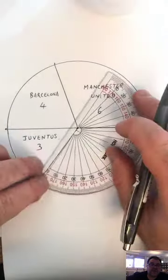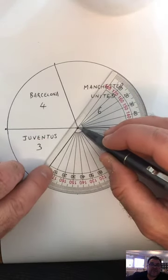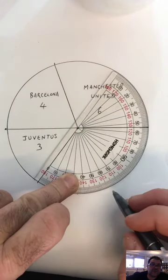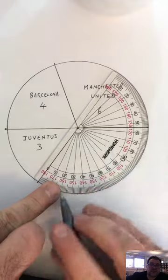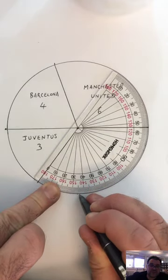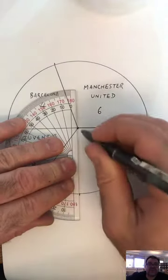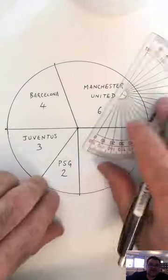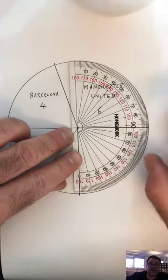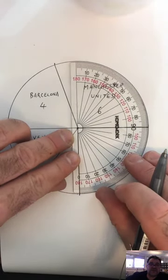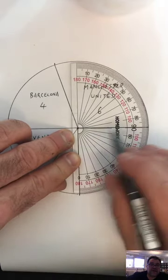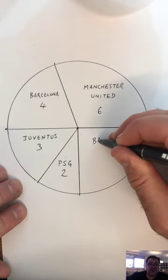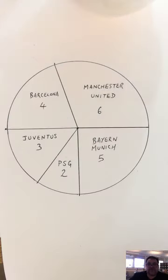Then I'm going to line up the angle measurer, centre at the centre, and 0 on the line I just drew, and measure the next angle — that's the angle for PSG. And finally, the last one should be 90 degrees for Bayern Munich. Centre at the centre, 0 on the line I just drew, and it comes back to 90 degrees. So that works. I can write in Bayern Munich, five people. And now I just need to colour it in.